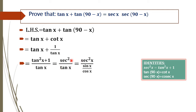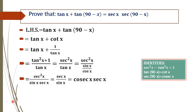Now tan x is not yet in terms of sec x, so we have to rearrange tan x in terms of sec x. So tan x is rewritten as sin x divided by cos x. We know that 1 by cos x is sec x. So this equation becomes sec squared x, divided by sin x into sec x, where 1 by cos x becomes sec x.